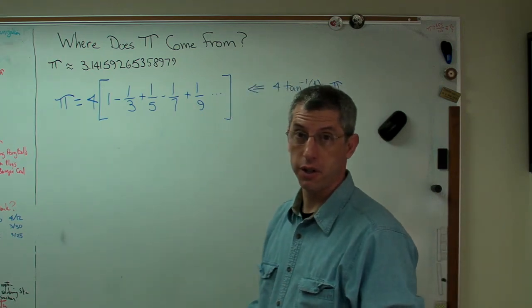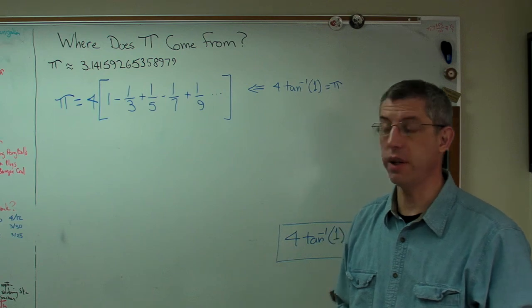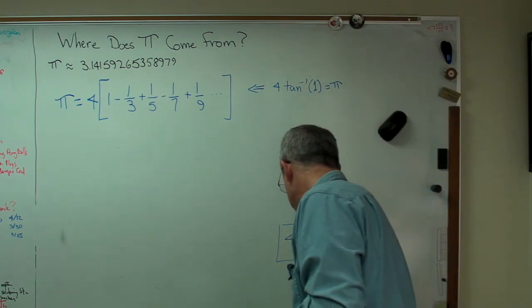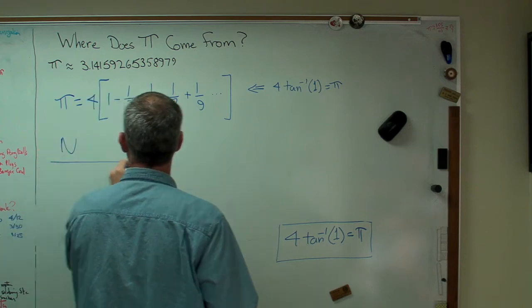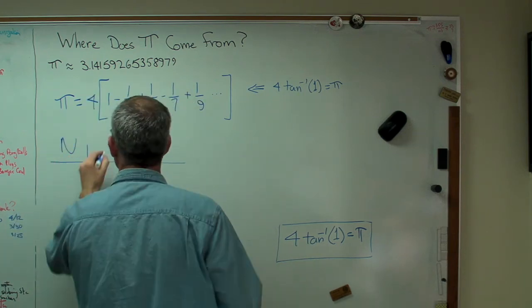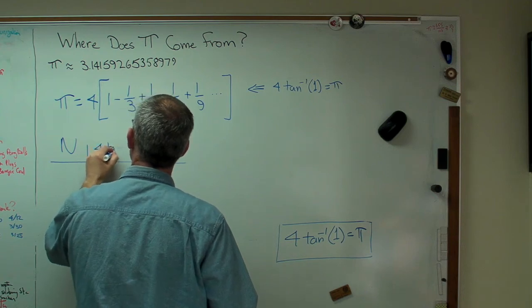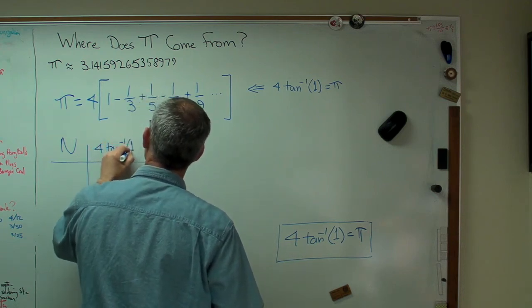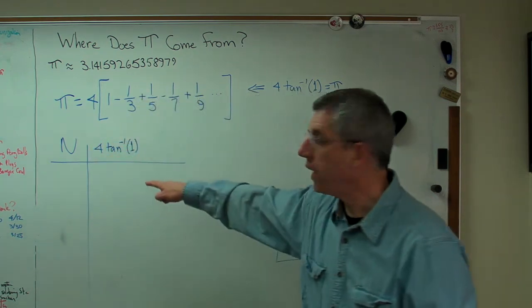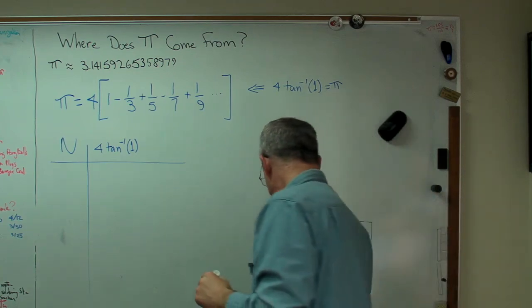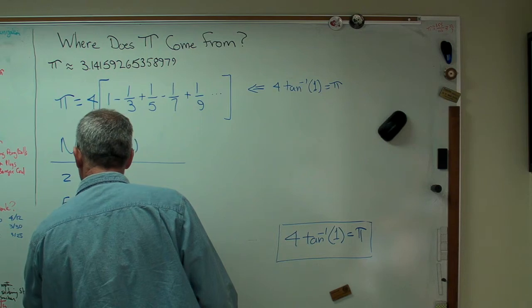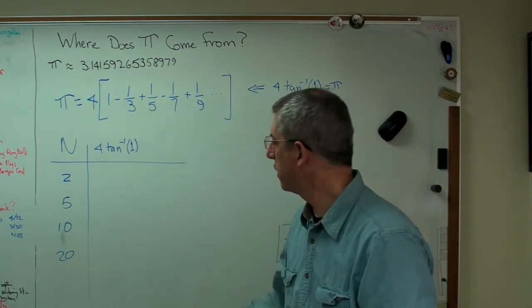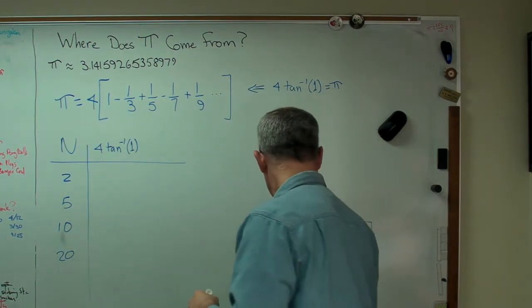It converges to pi. Now it doesn't do it very quickly and that's the problem. I've got some numbers written down here, so I'm going to make a quick table where n is the number of terms. I'm going to start writing down values of pi here. So I'm going to go 2, 5, 10, and 20. This is basically a logarithmic progression.